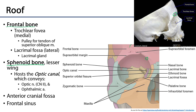Laterally on the frontal bone we have the lacrimal fossa, where the lacrimal gland — the gland which produces tears — is going to sit. There is also within the frontal bone an irregularly shaped paranasal sinus known as the frontal sinus, which is just on the other side of that frontal bone from the orbit. And as previously mentioned, superior to the frontal bone of the orbit we'll be within the anterior cranial fossa.